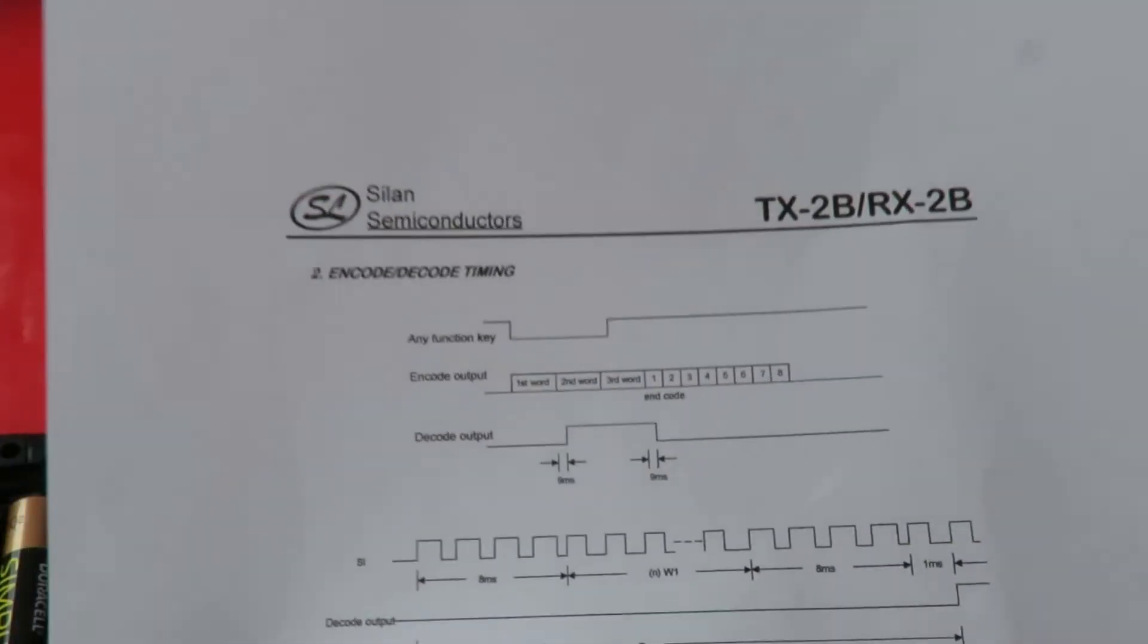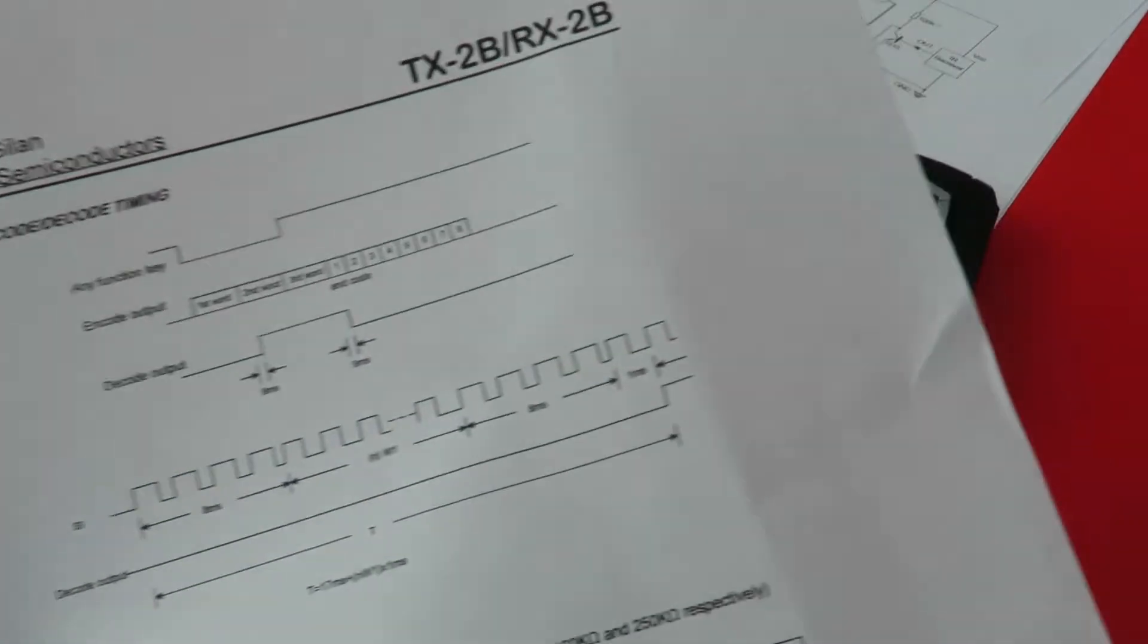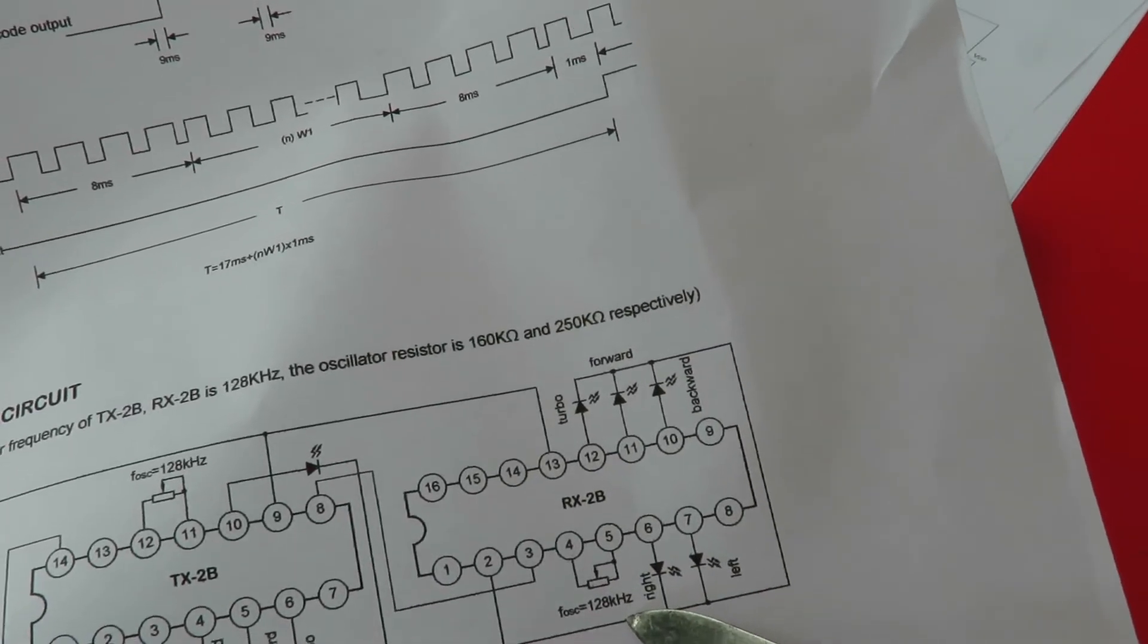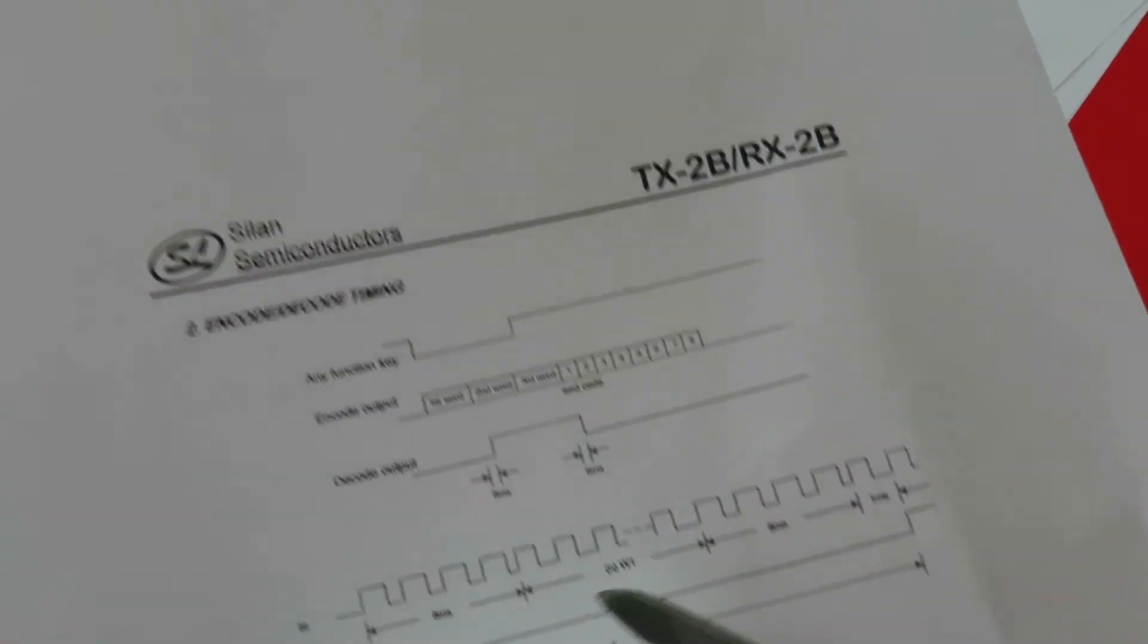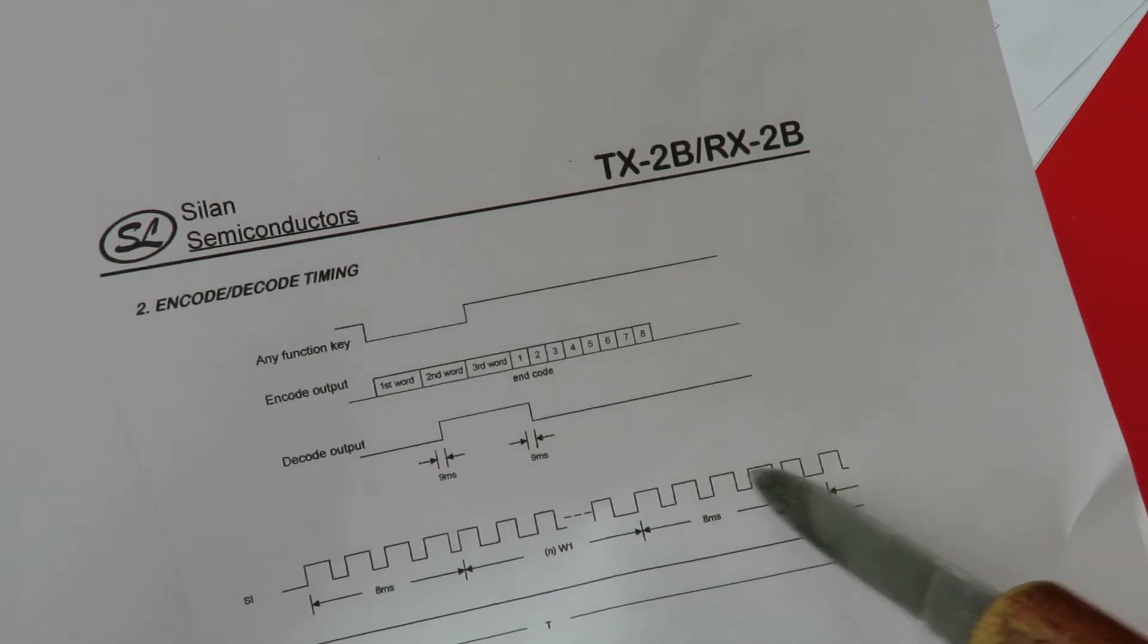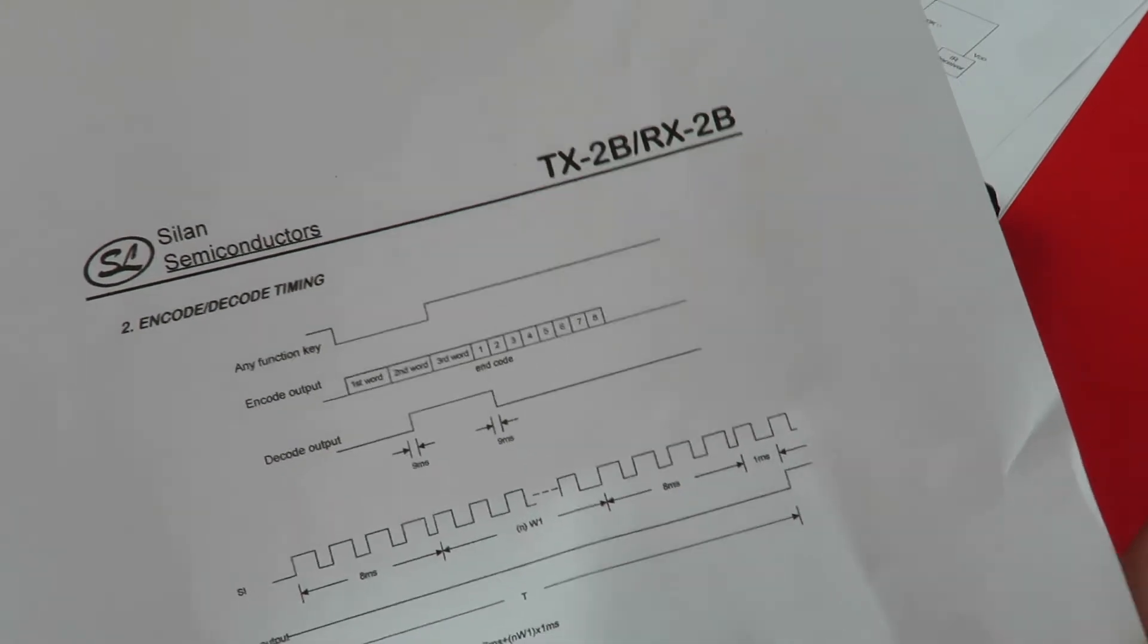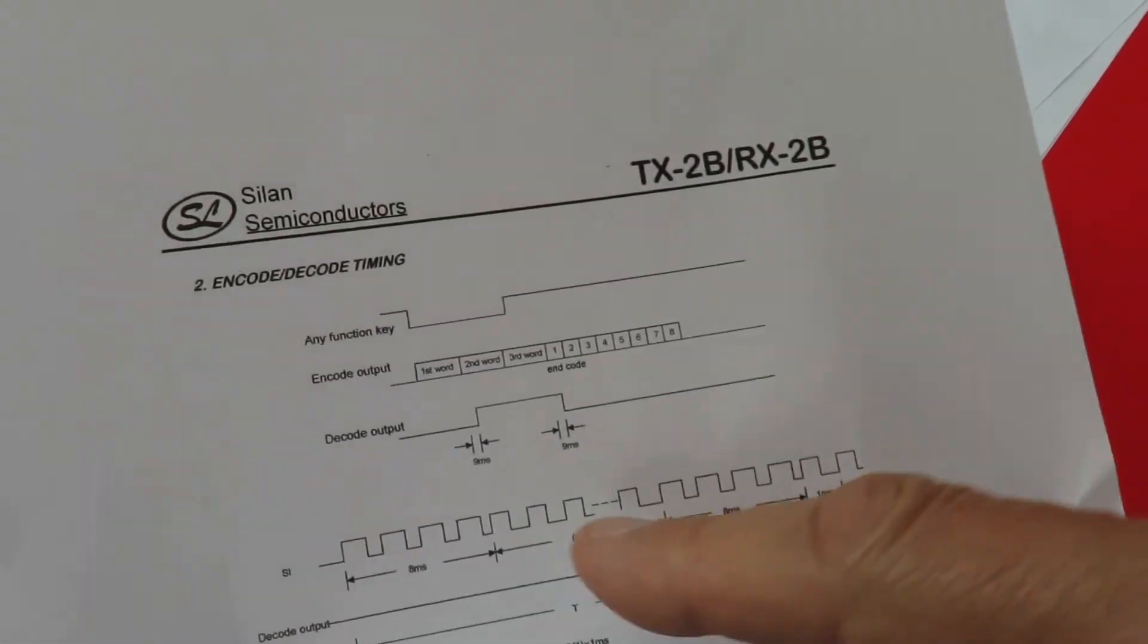Right, the frequency, which is actually 128 kilohertz. That frequency is the frequency of these signals. Nothing to do with 27 megahertz, 40 megahertz, 35 megahertz. This is the code, the actual number, bits and bytes.